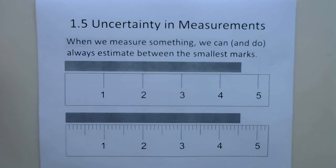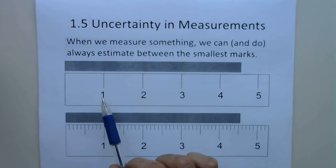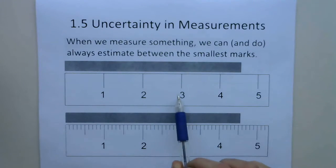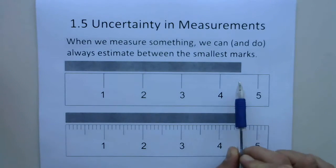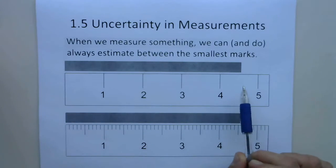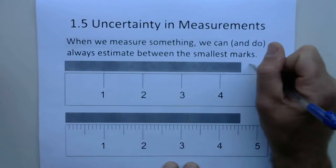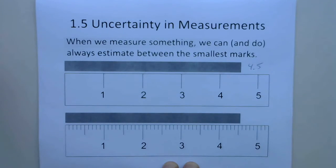So when we measure something, we are always going to estimate between the smallest marks on the instrument. Here we have an example with a ruler that has marks every centimeter, and we're trying to measure the length of this line. We can tell it's somewhere between four and five — we're certain of that digit — and then we're going to estimate to one more digit. So I might estimate this as 4.5 centimeters.